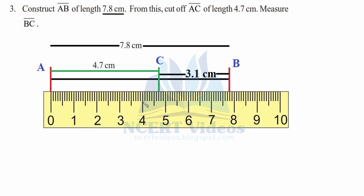AC has to be 4.7 cm — this is 4.5, this is 6, 7 — 4.7 cm. The remaining segment BC is found by subtraction: 7.8 minus 4.7 equals 3.1 cm. You can also count on the ruler: this is one, this is two, and there is one millimeter left, so the total is 3 cm plus 1 mm, that is 3.1 cm. Therefore line segment BC equals 3.1 cm.